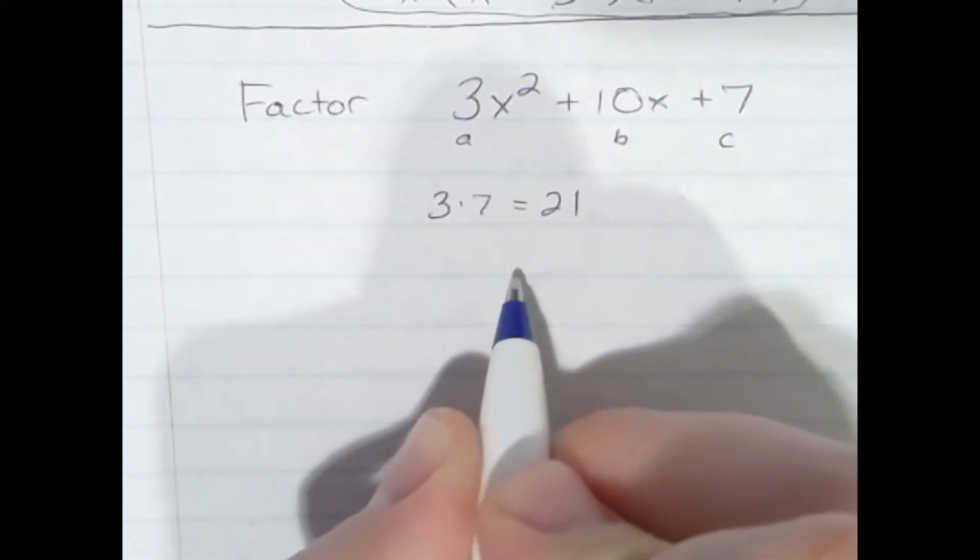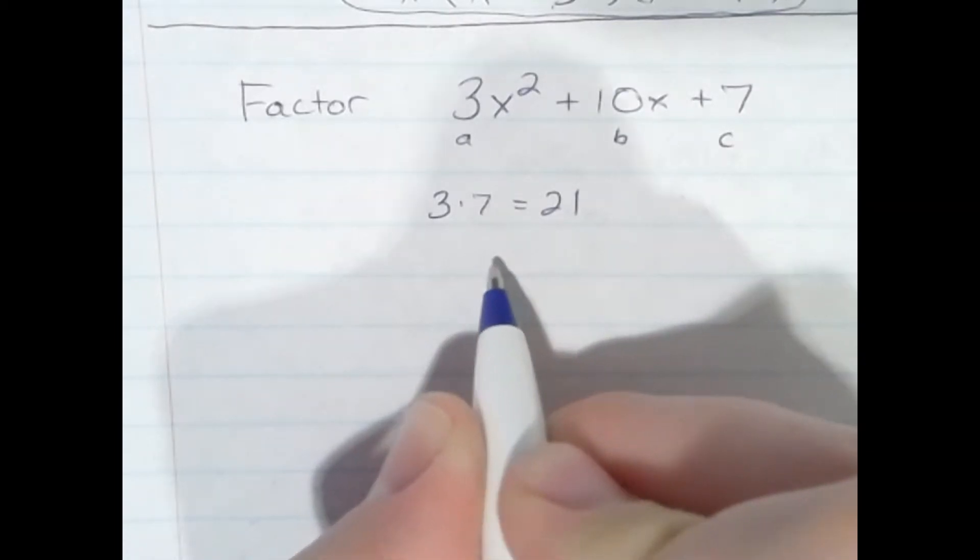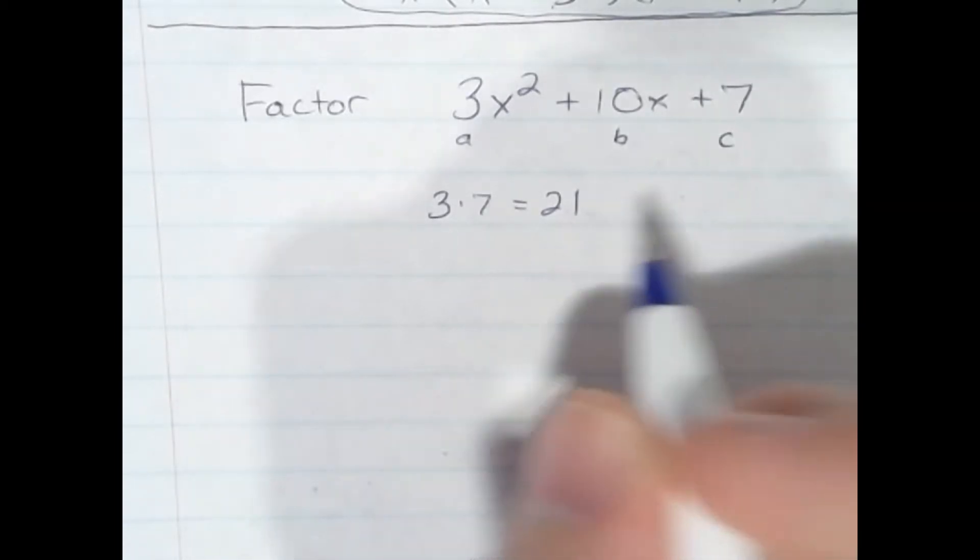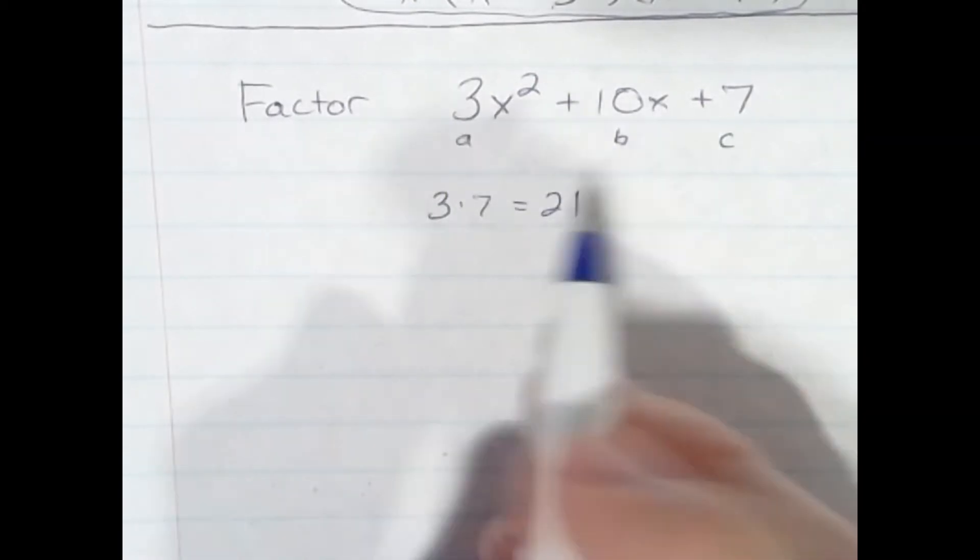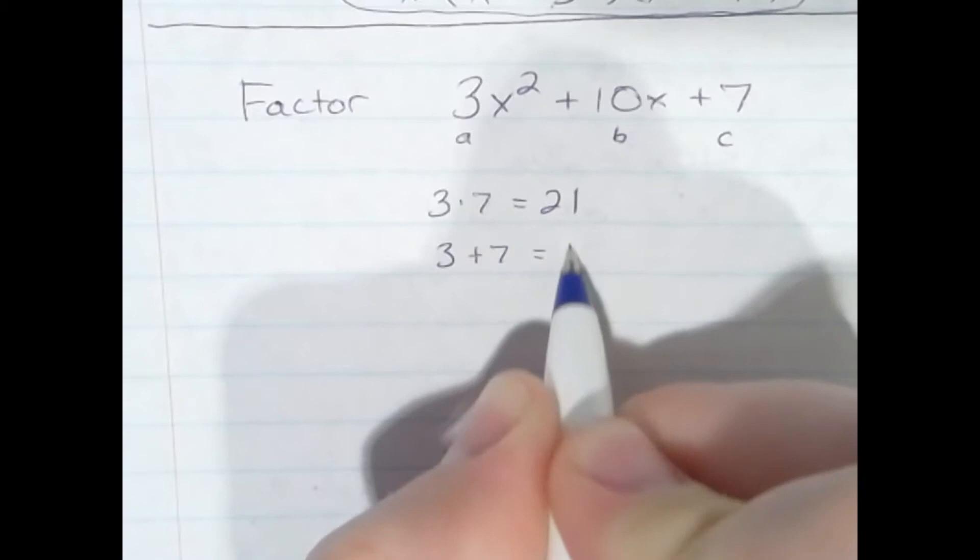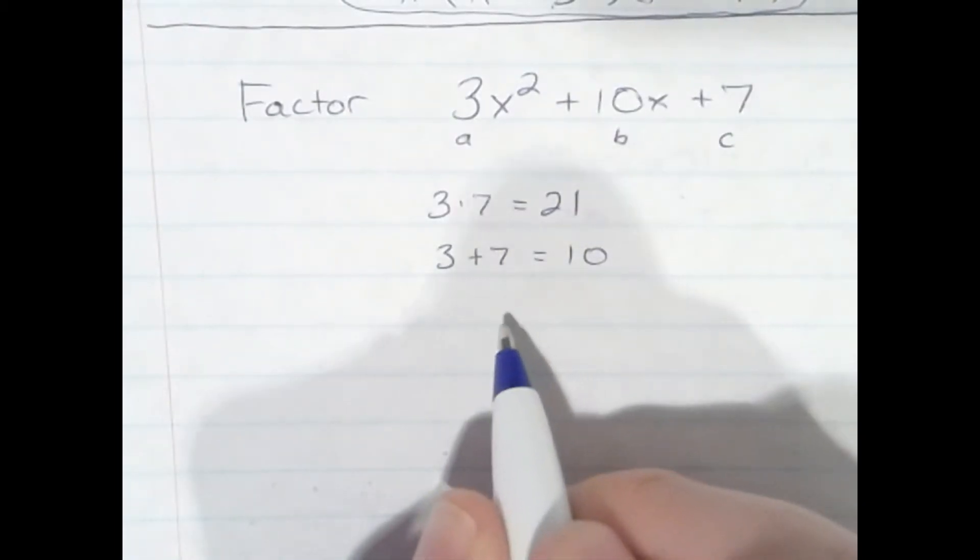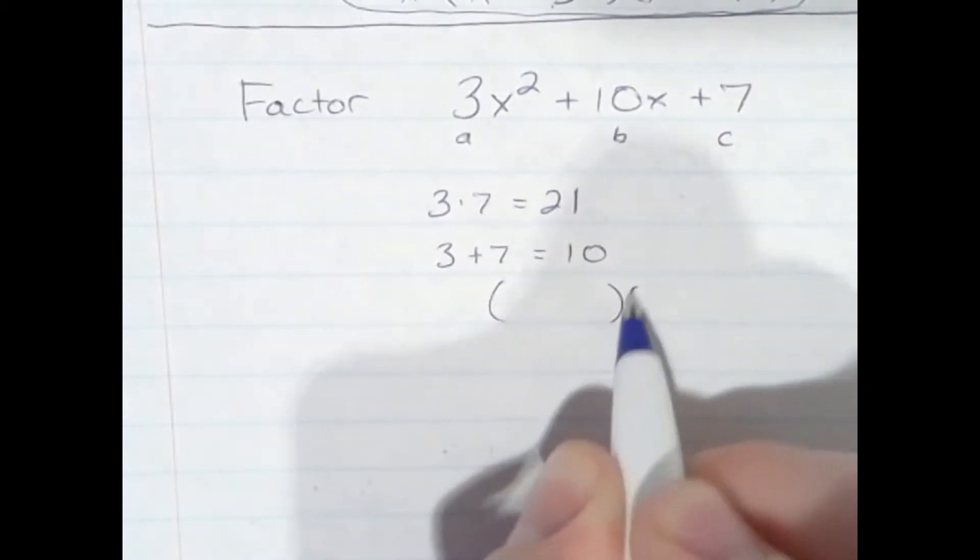Well, there's lots of ways to get 21, but 3 times 7 actually works, ironically, even though it's the same as these first two terms. Because if I get 3 plus 7, it does equal 10, and that's going to set me up for the first part of this factoring process.